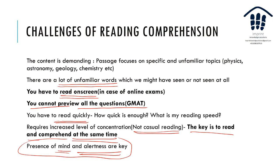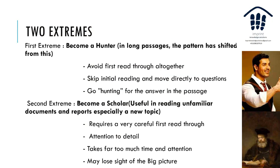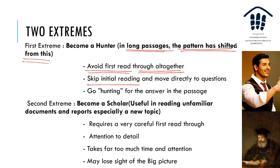Now, what are the different strategies in reading comprehension? The first extreme is becoming a Hunter. This is used especially for long passages — for exams like FMS in India. What you do is avoid the first read altogether, skip the initial reading, move directly to questions, and then go hunting for answers in the passage. As soon as you see a long passage, this hunting strategy becomes useful.